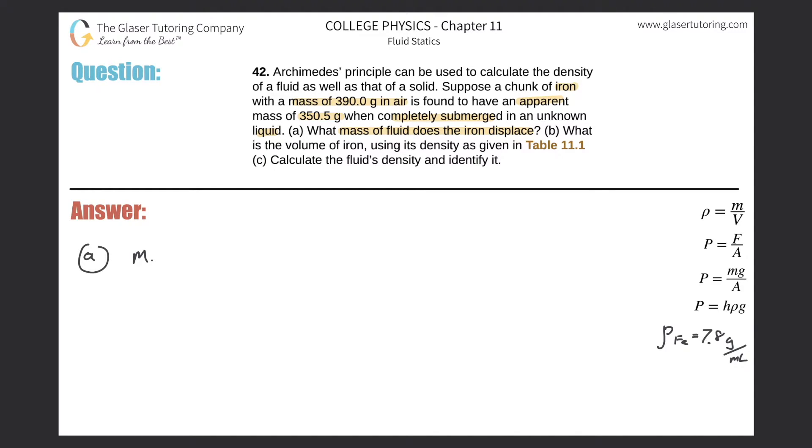So we have the mass of the fluid displaced will be equal to the mass of the object that displaces that fluid in air subtracted by the apparent mass of that object in the fluid. So I need to know two things in order to solve for the mass of the fluid. And fortunately, they told it to us. The mass of the object here in air, they told us was 390 grams, subtracted by the apparent mass, which is 350.5. So the mass of the fluid that was displaced is 390 minus 350.5, which equals 39.5 grams.